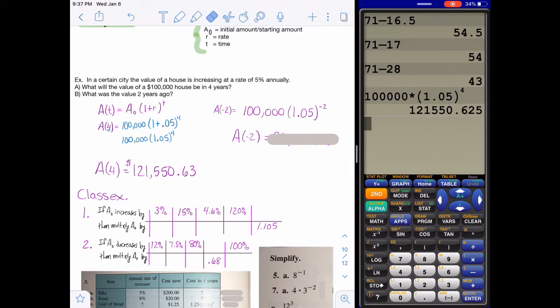To do it for the 2 years ago, the only difference is our exponent is negative. So 2 years ago is a negative 2. So then the formula is still with the 100,000 and the 1.05. That's still the same. And then that gives you $90,702.95.